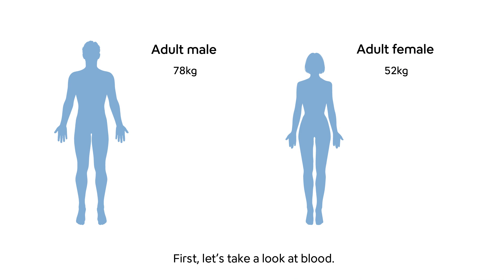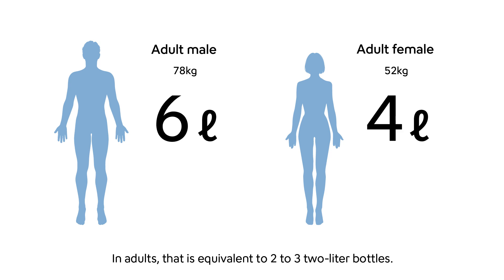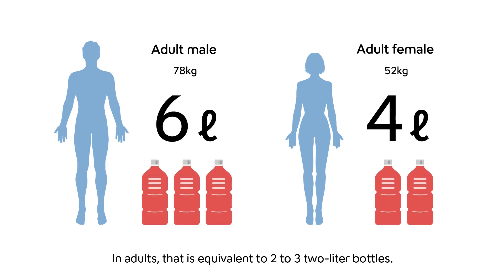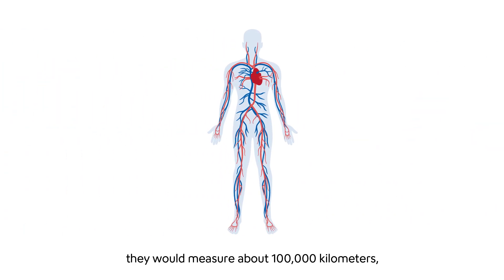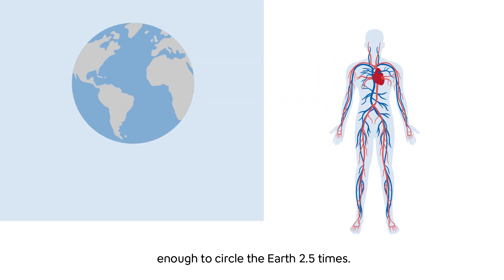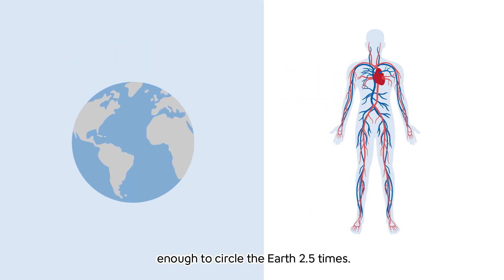First, let's take a look at blood. Blood makes up about one-thirteenth of body weight. In adults, that is equivalent to two to three two-liter bottles. If all the blood vessels were connected end-to-end, they would measure about 100,000 kilometers, enough to circle the earth 2.5 times.